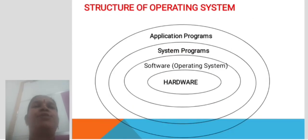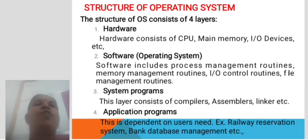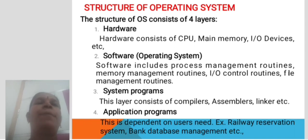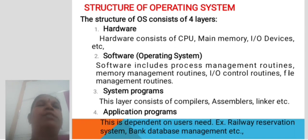Structure of Operating System. The structure of the OS consists of 4 layers. The first layer is Hardware, which consists of CPU, main memory, I/O devices, etc. The second layer is the Software Operating System, which includes process management routines, memory management routines, I/O control routines, and file management routines.